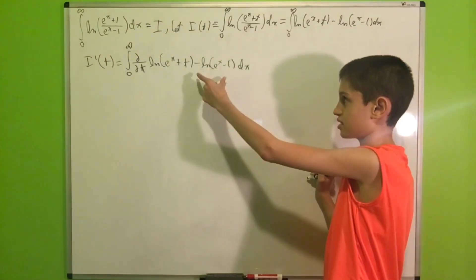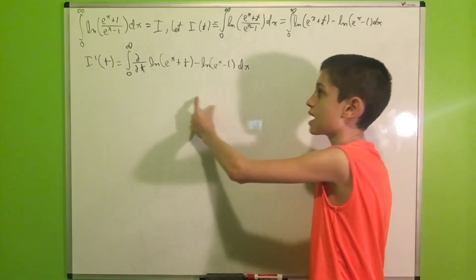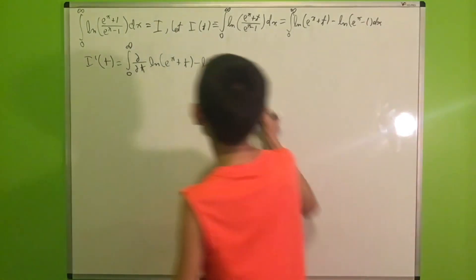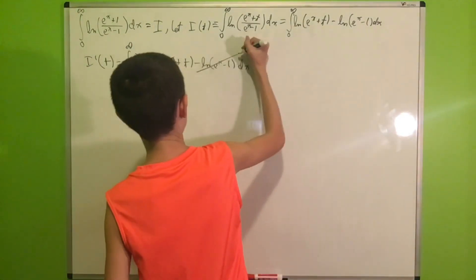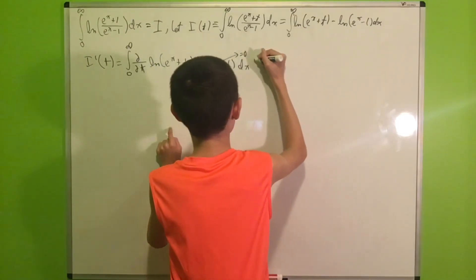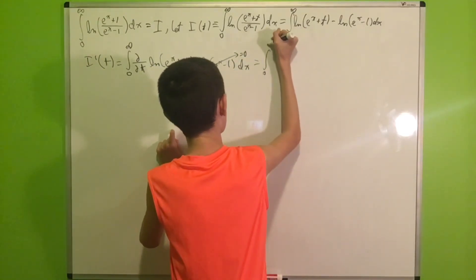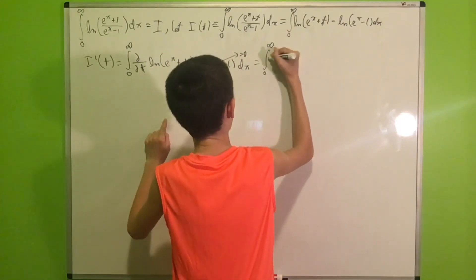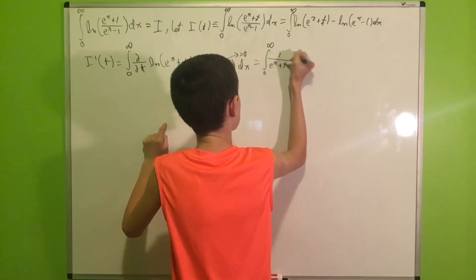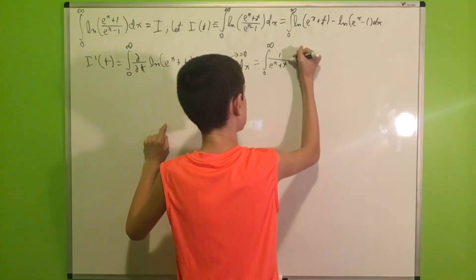Now, ln(e^x − 1) is a constant with respect to t. Hence it will go to 0 because of the derivative, and we are left with the integral from 0 to infinity of 1 / (e^x + t) dx, because we are differentiating with respect to t.